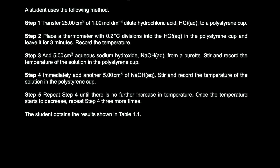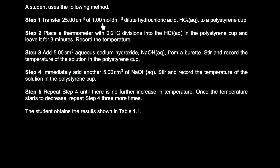The student first transfers 25 cm³ of 1 mol/dm³ dilute hydrochloric acid to a polystyrene cup, then places a thermometer with 0.2°C divisions into the HCl and leaves it for three minutes. The reason is to ensure the temperature of the solution equilibrates with the surroundings and reaches a constant temperature.